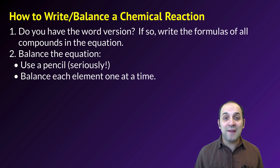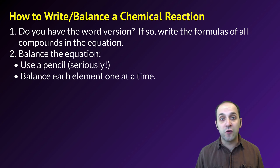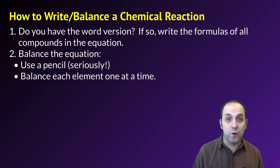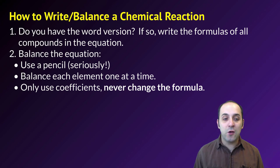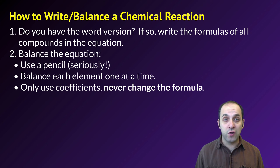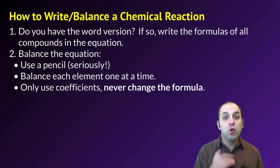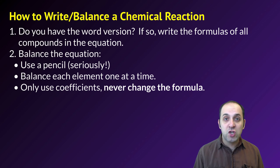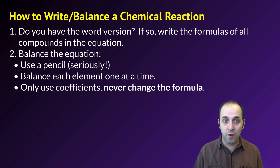Balance each element one at a time — pick one to start, make sure there's the same number on both sides of the arrow, then move on to the next. As you do that, you'll probably find you need more of an element than you initially have, and the only way to get that is to change the coefficients — the numbers in front of the chemical formula. You can never change the chemical formula itself, and you cannot put a coefficient in the middle of a formula.